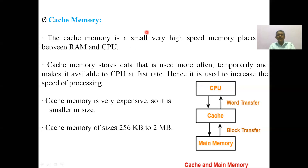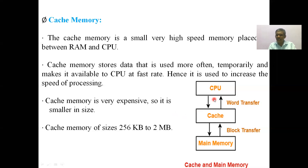Cache — pronounced as 'cash' — cache memory is a small, very high-speed memory placed between RAM (main memory) and the CPU. The cache memory stores data that is used more often, temporarily, and makes it available to the CPU at a faster rate. It stores data temporarily and sends it to the CPU on request at a faster rate. Hence, it is used to increase the speed of processing.